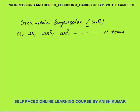What is a GP? A GP is a progression of the kind A, AR, AR², AR³, up to N terms. What makes a progression a geometric progression? It is a progression in which the ratio of any two consecutive terms is the same.